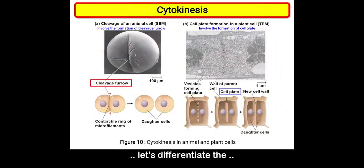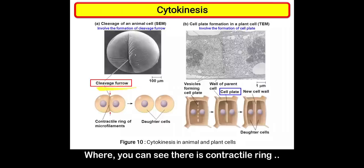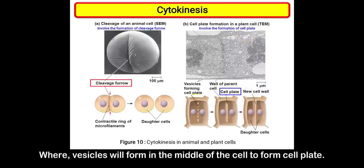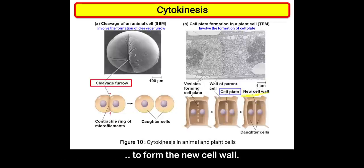Let's differentiate the cytokinesis process in animal cells and plant cells. In animal cells, cytokinesis begins with a cleavage furrow, where a contractile ring splits the cell into two daughter cells. In plant cells, the process is known as formation of a cell plate, where vesicles form in the middle of the cell to create a cell plate. Eventually, this cell plate fuses with the cell wall to form the new cell wall, resulting in two daughter cells.